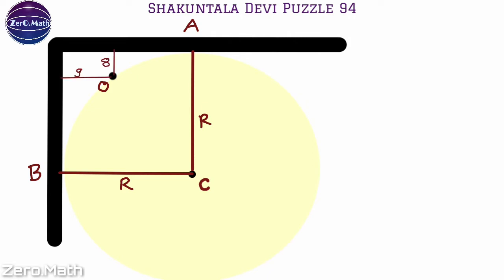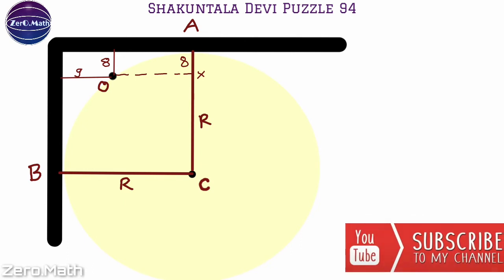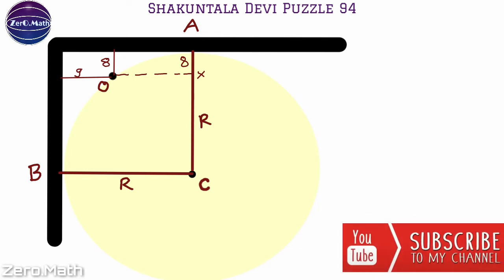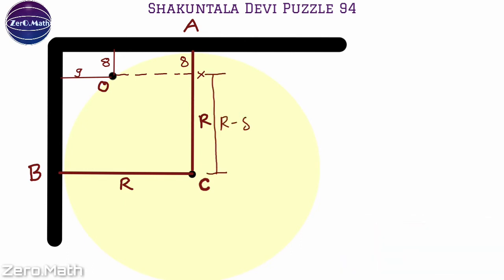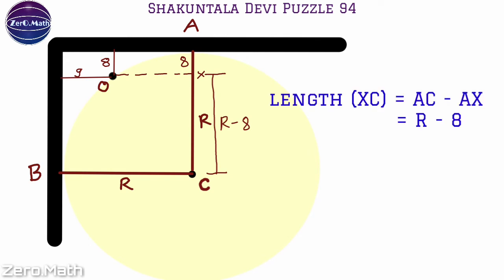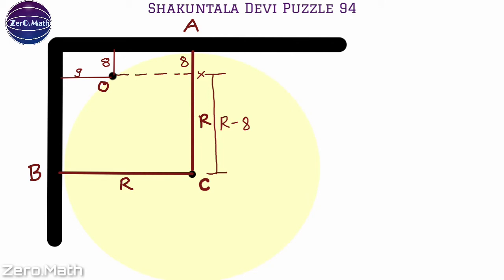If I extend this line further to point X, touching the radius of the circle, the distance between point A and X will be eight inches. So we can say that the distance between point X and C, which is the center of the circle, will be r minus eight inches, because the length of AC is equal to r, the radius of the circle.